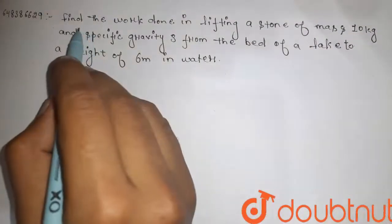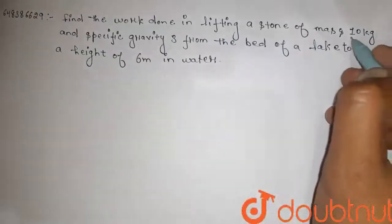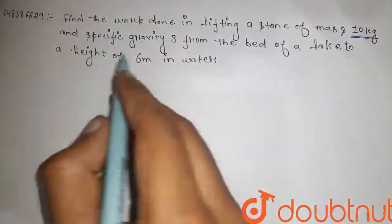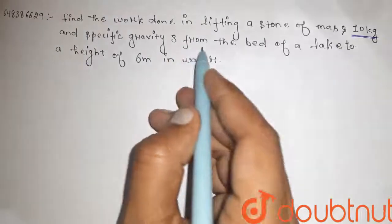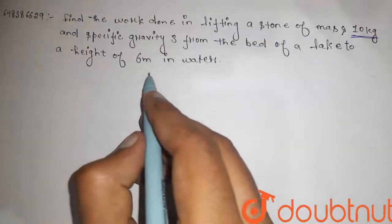Hi guys, here is the question. Find the work done in lifting a stone of mass 10 kg and specific gravity 3 from the bed of a lake to a height of 6 meters in water.